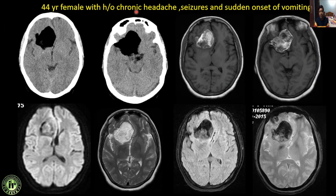Next: a 44-year female with chronic headaches, seizures, and sudden onset vomiting. There is a fat-containing lesion in the right frontal lobe causing midline shift. The lesion is heterogeneously hyperintense on T1, no restricted diffusion on DWI, hyperintense on T2, not completely suppressed on FLAIR, and showing blooming on GRE. This is a case of atypical or white epidermoid — hyperintense on T1 due to high triglyceride content, high lipid content, and high protein content.